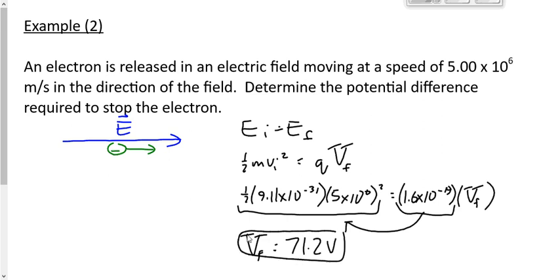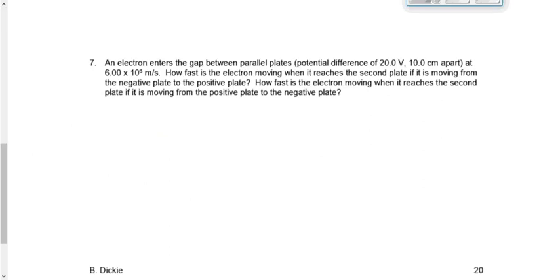So it's like this car going up the hill — when it reaches its max height before it stops and begins to come back down, its final height would be 71.2 meters, which is analogous to the 71.2 volts. Now I'd like you to look at worksheet number 9. Skip questions 5 and 6, and go straight to question 7. Question 7 is in two parts with the same setup. In question A, find how fast the electron is moving if it's moving from negative to positive.